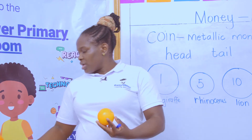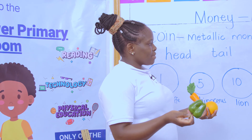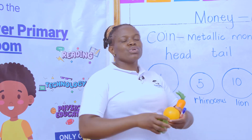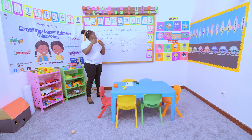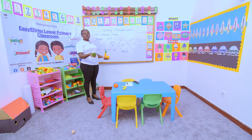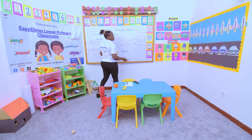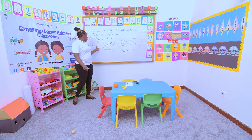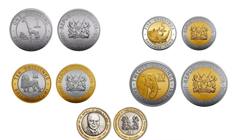Which one of these coins can you use to buy a lot of things? The 40 shilling coin is the one that you can use to buy a lot of things. But when you look at the one shilling coin, it has the smallest value. The only thing you can buy with one shilling is a sweet.